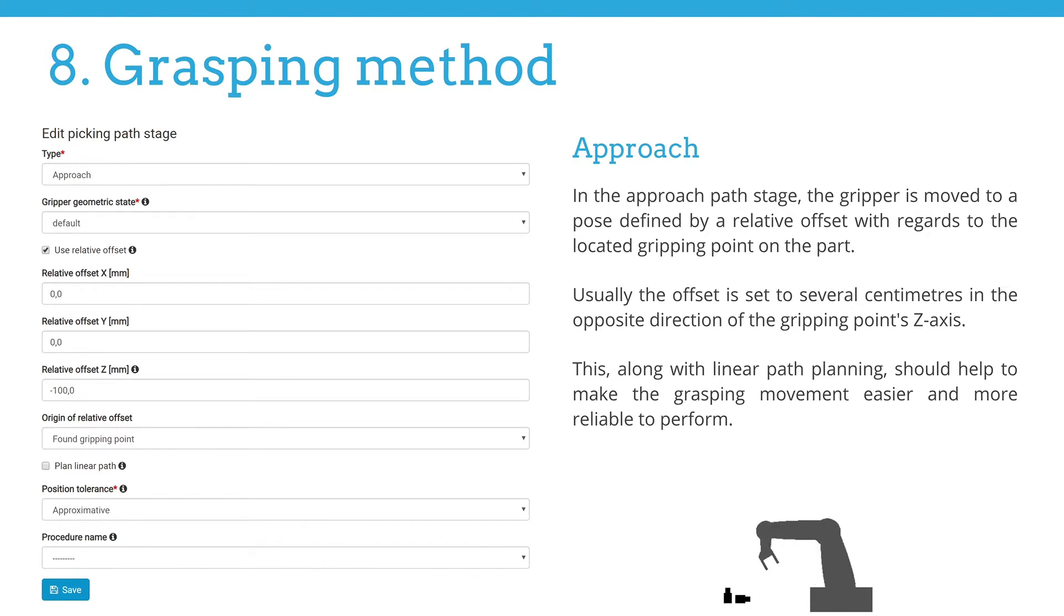The second stage in the sequence is a step called approach. In this path stage, the gripper is moved to a position defined by a relative offset with regards to the located gripping point on the part. Usually, the offset is set several centimeters in the opposite direction of the gripping point's z-axis. Please ensure that you are now working in the coordinate system of the part, hence the z-axis is pointing inside the bin. This is the reason why the offset number is negative. Do not worry if this explanation is not completely understood. We have added hints, articles, and pictures explaining the approach path stage in great detail. These documents are available in Bin Picking Studio on the right hand side of the panel.